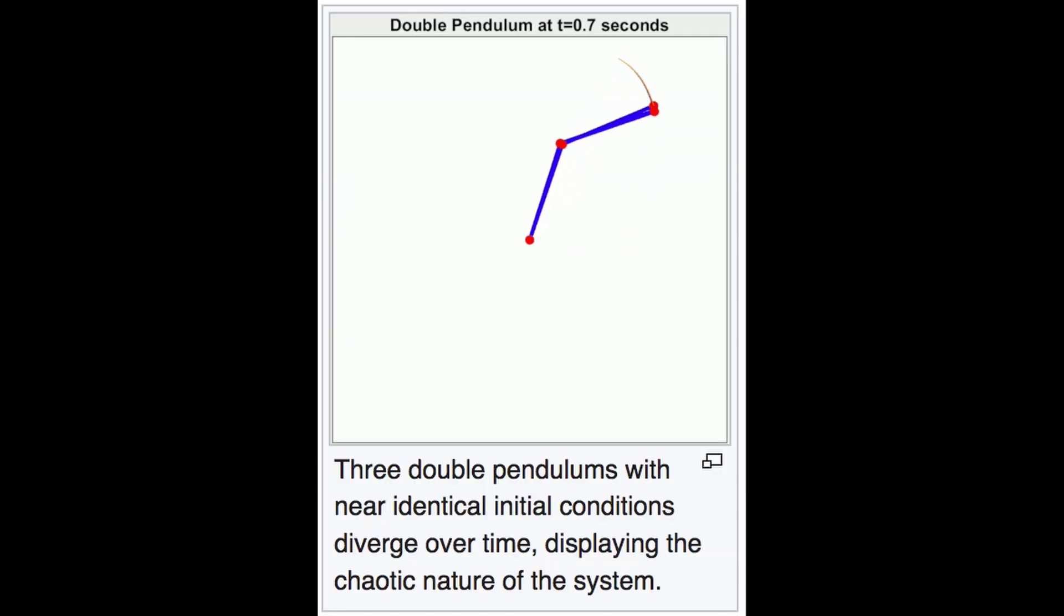This sensitivity to small changes is what makes a system like the double pendulum chaotic. The double pendulum is a common example of chaos because if you change the initial conditions, even slightly, the path the pendulum takes quickly diverges from all the other possible futures.